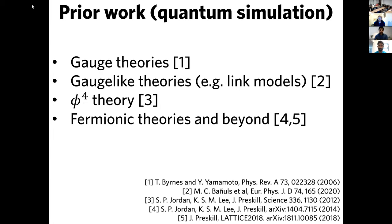Indeed, quantum simulation simply evades the well-known sign problem and allows us to simulate the temporal dynamics of large complex quantum systems. There has been quite a lot of prior work on using quantum simulation to understand quantum field theory. A key result I found particularly attractive was that of Byrnes and Yamamoto back in 2006 — they presented a quantum simulation algorithm for gauge theories. Also, many gauge-like theories known as link models have had analog quantum simulation proposals made.